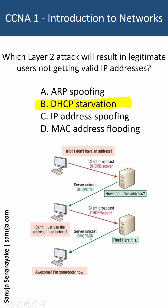A DHCP starvation attack will basically result in legitimate users not getting a valid IP address. The attack works by flooding the DHCP server with requests using spoofed MAC addresses, quickly exhausting all available IP addresses in the pool. Eventually, legitimate devices attempting to connect to the network will be unable to obtain an IP address and thus cannot communicate.